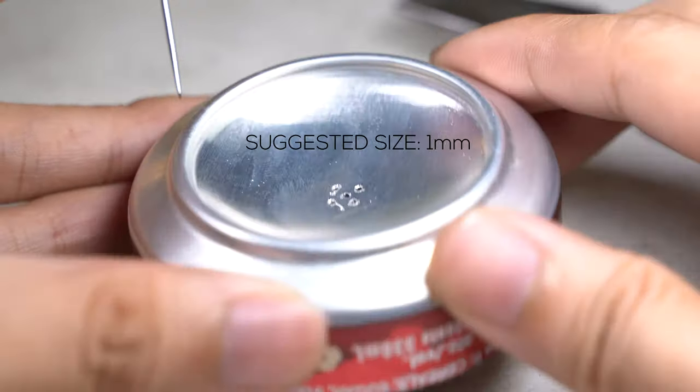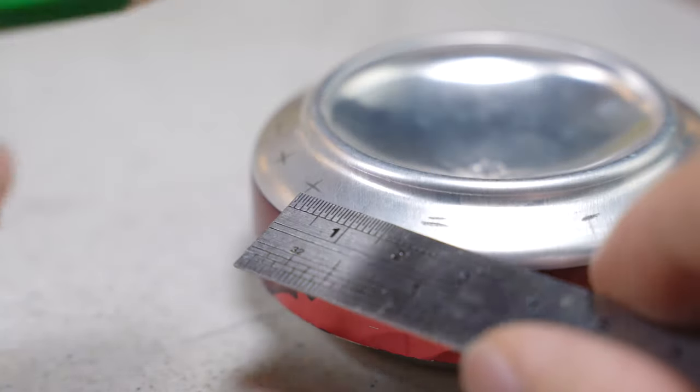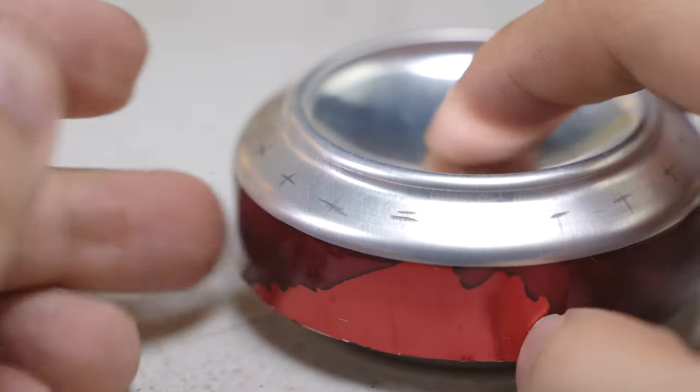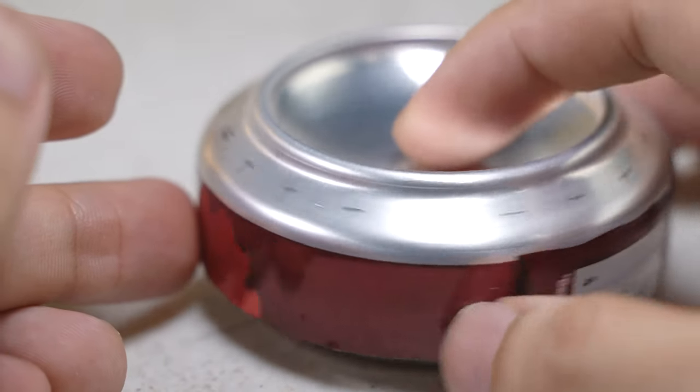Grab a pencil and a ruler. Then mark the beveled edge of your can with a 1 cm interval. This is a stencil for marking holes for the burner.